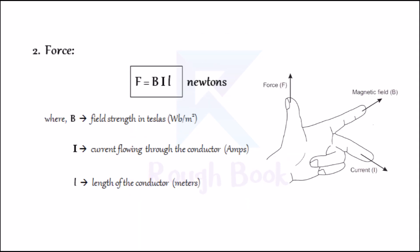Number two: Force. According to Fleming's left hand rule, when we hold the thumb, forefinger, and second finger of the left hand such that they are at right angles to each other, the forefinger represents the direction of magnetic field, the second finger the direction of current, and the thumb represents the direction of force. The magnitude of this force is given by F = BIL. The unit of force is Newtons, where B is the field strength in Teslas (Webers per meter square), I is the current flowing through the conductor in amperes, and L is the length of the conductor in meters.